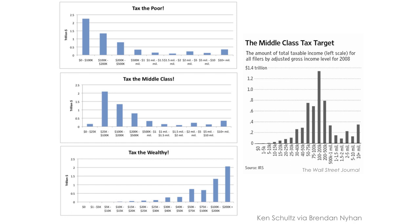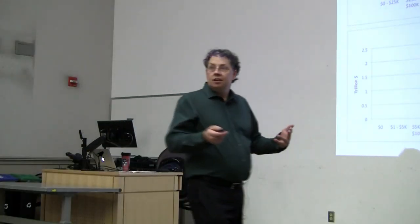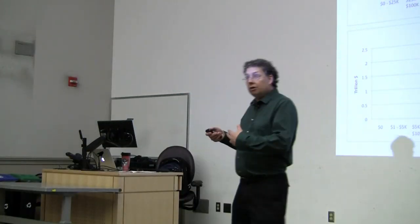Tax the middle class. Set up a bin from $25,000 to $100,000. And now that's where all the money is. Tax the wealthy. Set up a bin from $200,000 on up. That's where all the money is. The way that you bin the data totally determines, in this case, the story that you're telling.